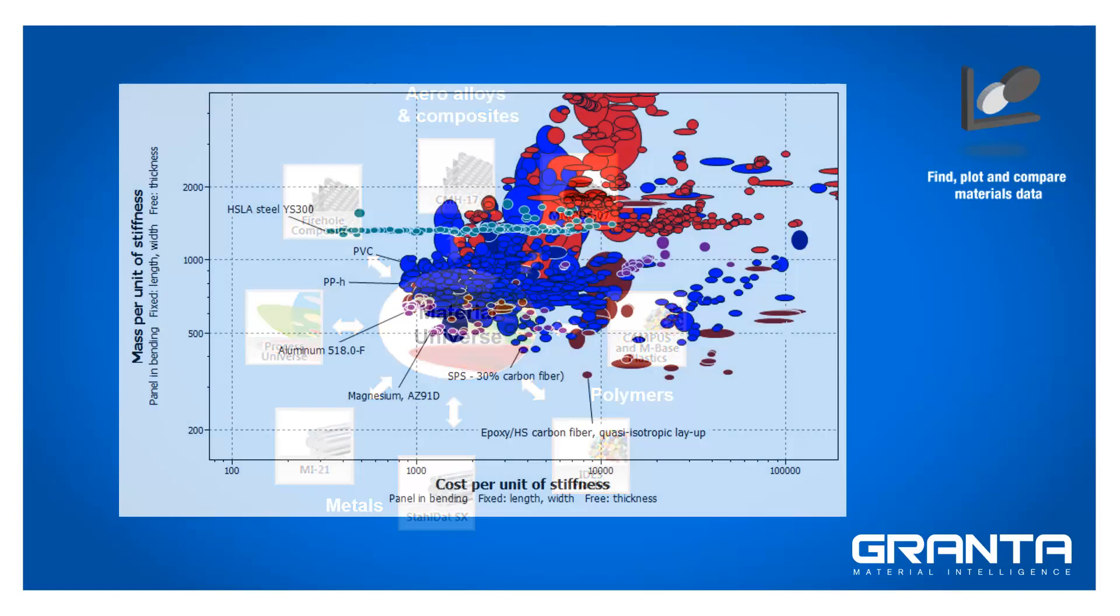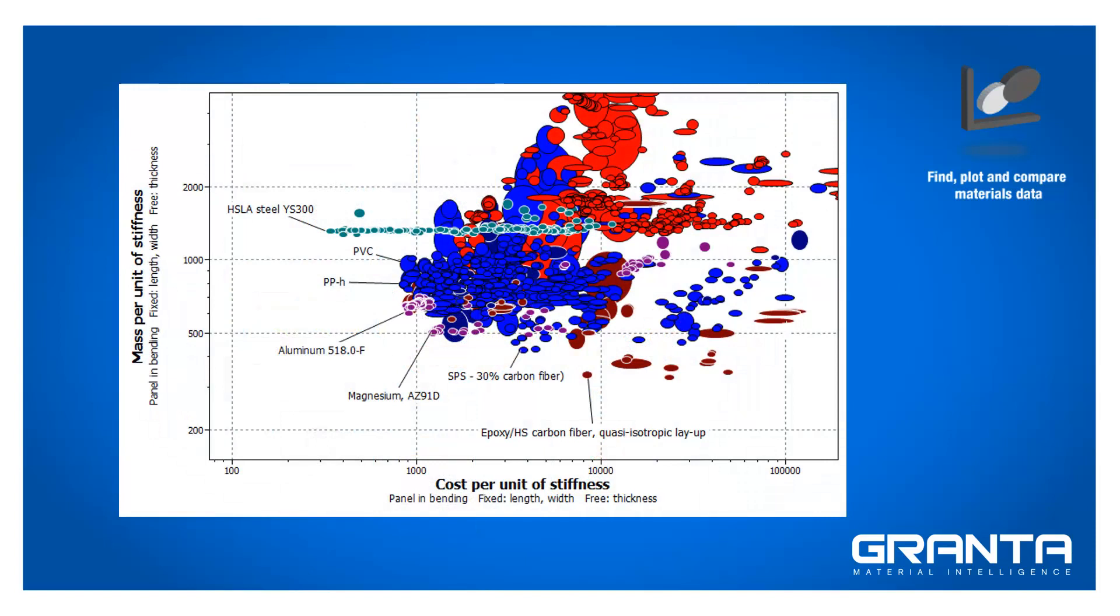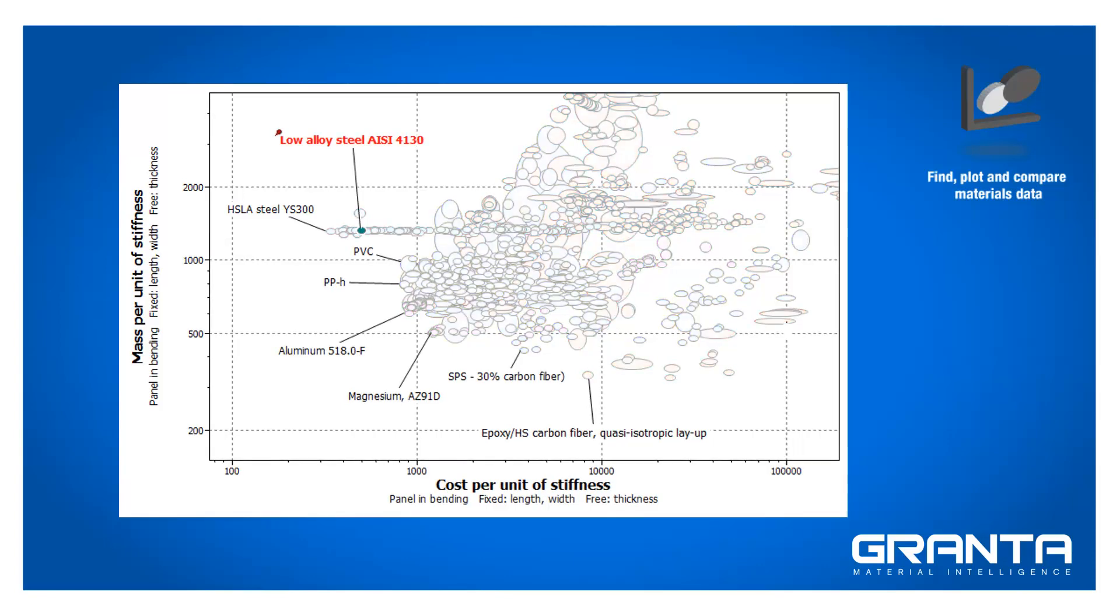CS Selector also provides highly visual charting and comparison tools for faster, clearer decision-making. Here I've used the Material Universe data to plot the mass versus cost trade-off for a light, stiff panel loaded in bending. I can readily identify the trade-off between different materials and understand how they perform relative to my current material and my company's preferred materials.